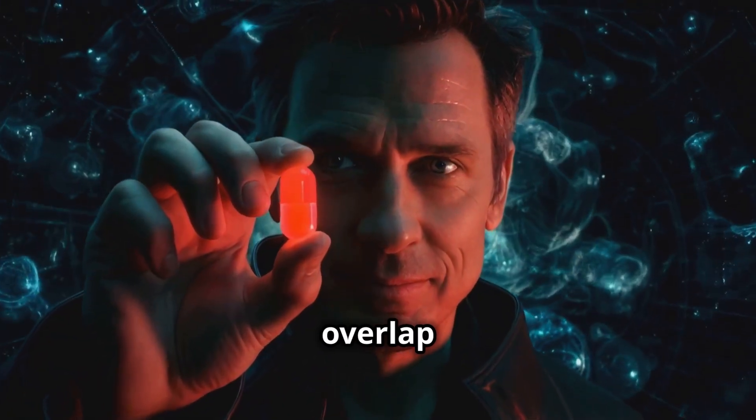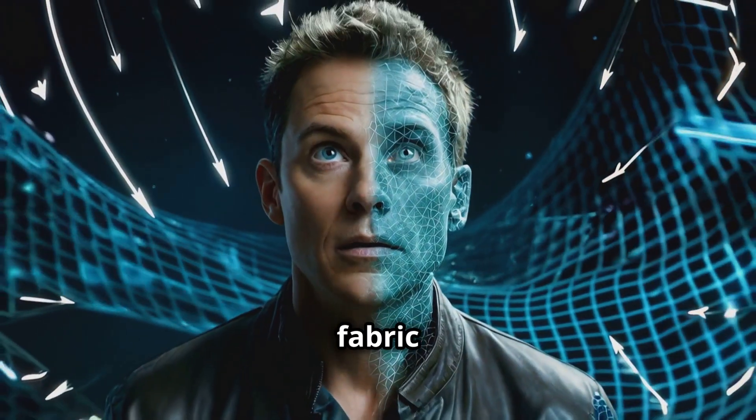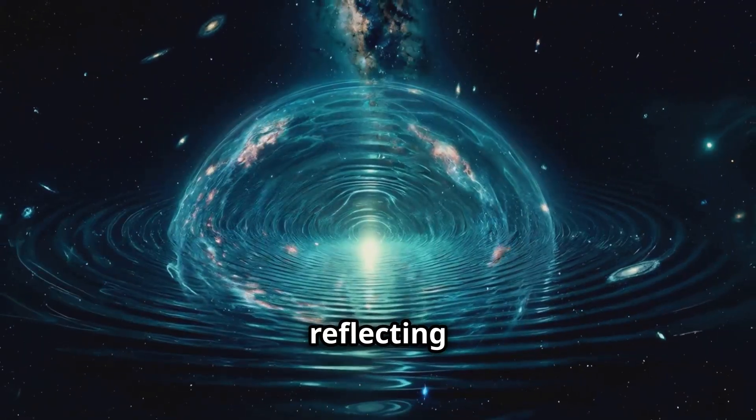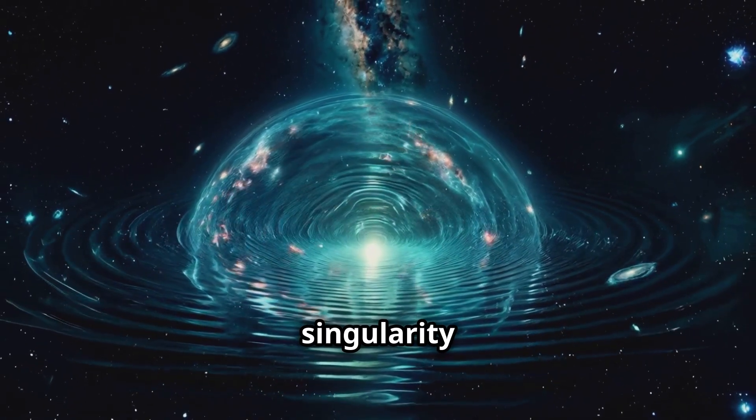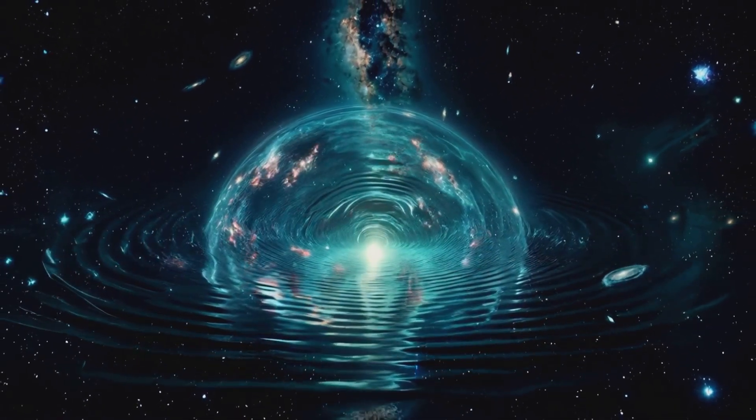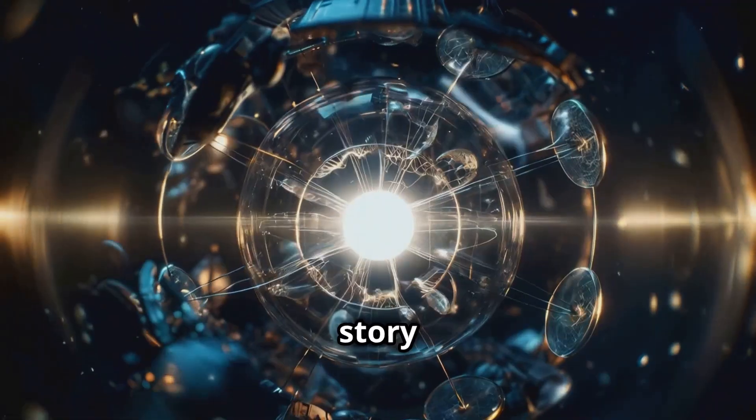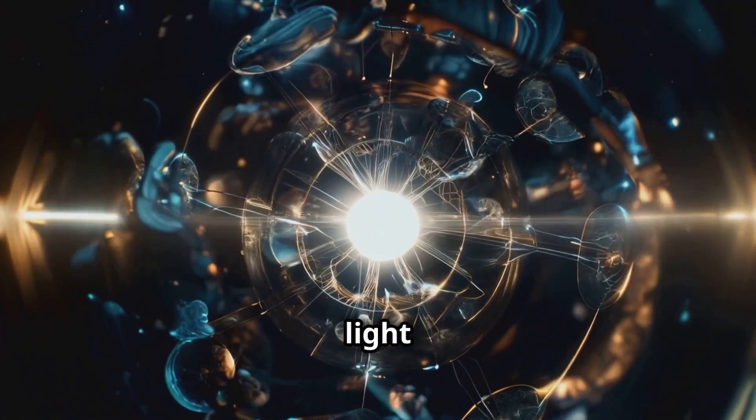creating interference patterns that ripple outward. These ripples meet and overlap, forming the fabric of space and time. At the edges, the ripples shimmer, reflecting back toward the singularity where they begin again. This infinite feedback loop is the story of everything, a story written in and projected with entangled light.